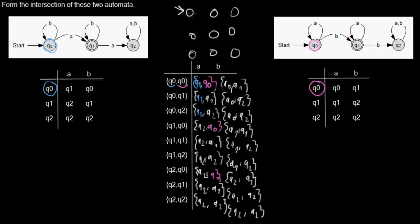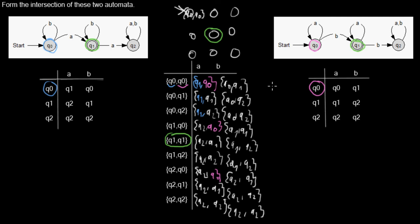The final states are Q1,Q1 — the states where we are in the final state in both automata. You can see the full automaton in another video. The aim of this video was to show how the intersection automaton is constructed using the transition table. I hope it helped you.